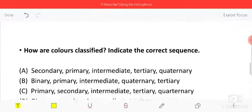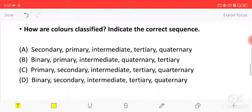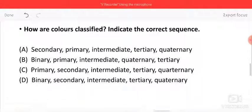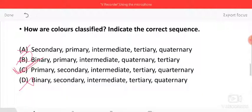How are colors classified? Indicate the correct sequence. Colors don't start with secondary or binary. Colors always start with primary, then secondary, then tertiary, and quaternary. So this is the correct sequence.